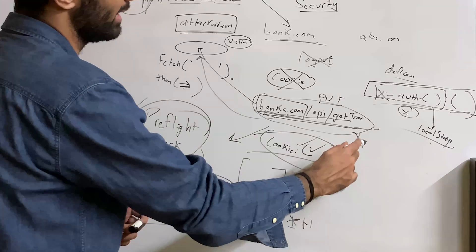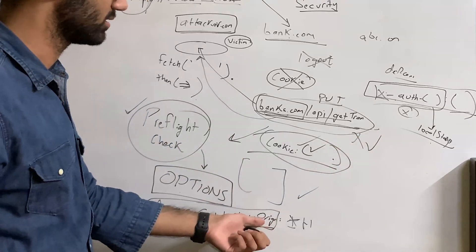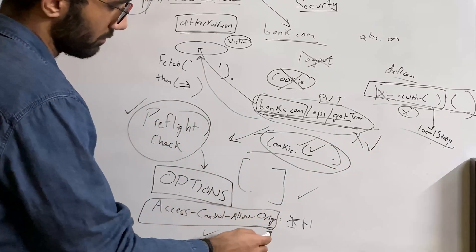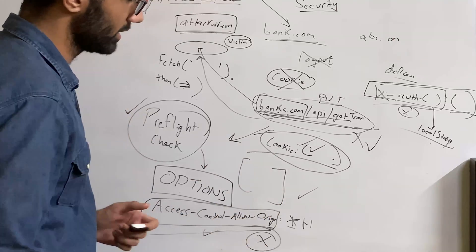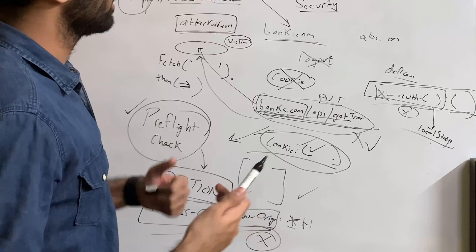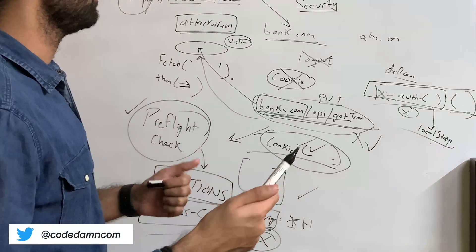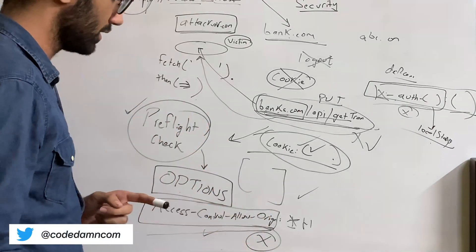By default, if this is not returned, then as a security measure, browsers always block the request. So that's obviously there, but that is all CORS is about. The next time you have a CORS error, the first thing you have to see is this thing: access-control-allow-origin. Are you whitelisting your origin or not?